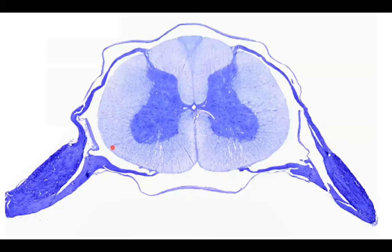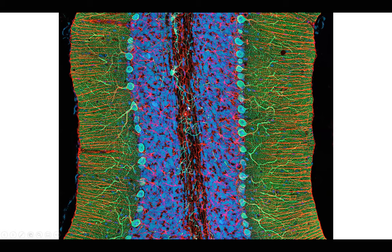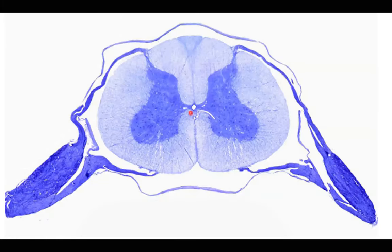Our next slide involves the spinal cord. As part of the central nervous system, it has gray matter and white matter — but notice the orientation is different. In the brain — both the cerebrum and cerebellum — gray matter is on the outside and white matter is inside. It's the opposite in the spinal cord: white matter is superficial and gray matter is deep.